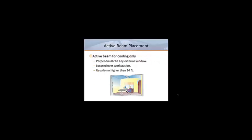When active beams are being used for cooling only, they should be placed perpendicular to any exterior glass. Unlike passive beams, the best location is directly over any work area or stationary occupants. Since active beams discharge air like conventional ceiling diffusers, this placement provides the highest comfort.